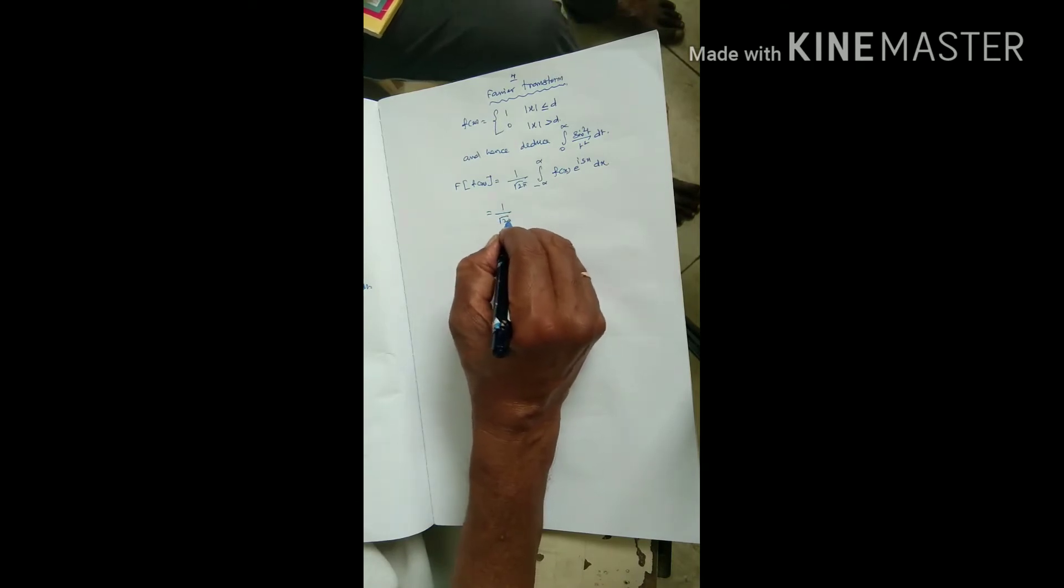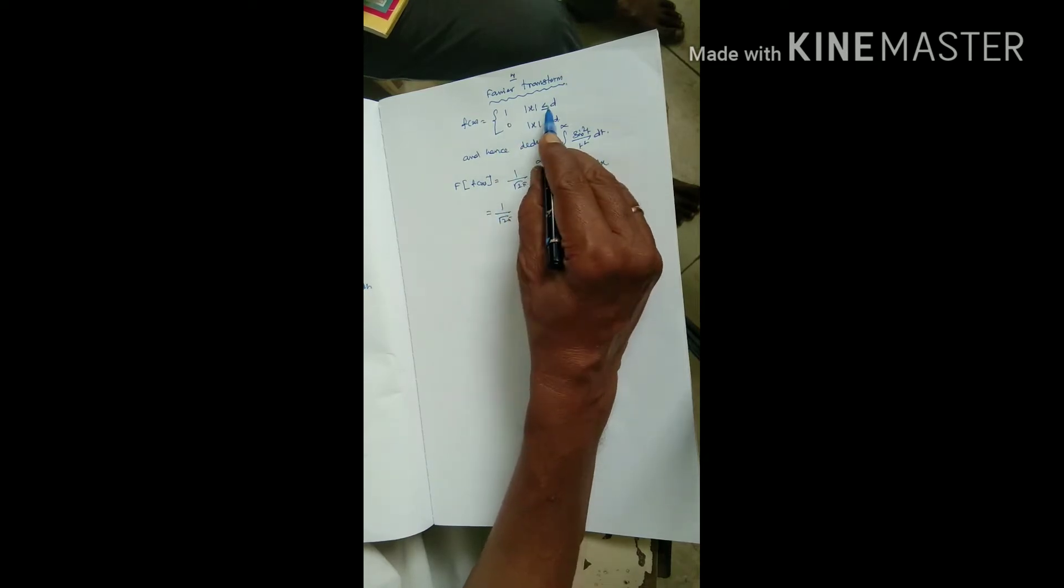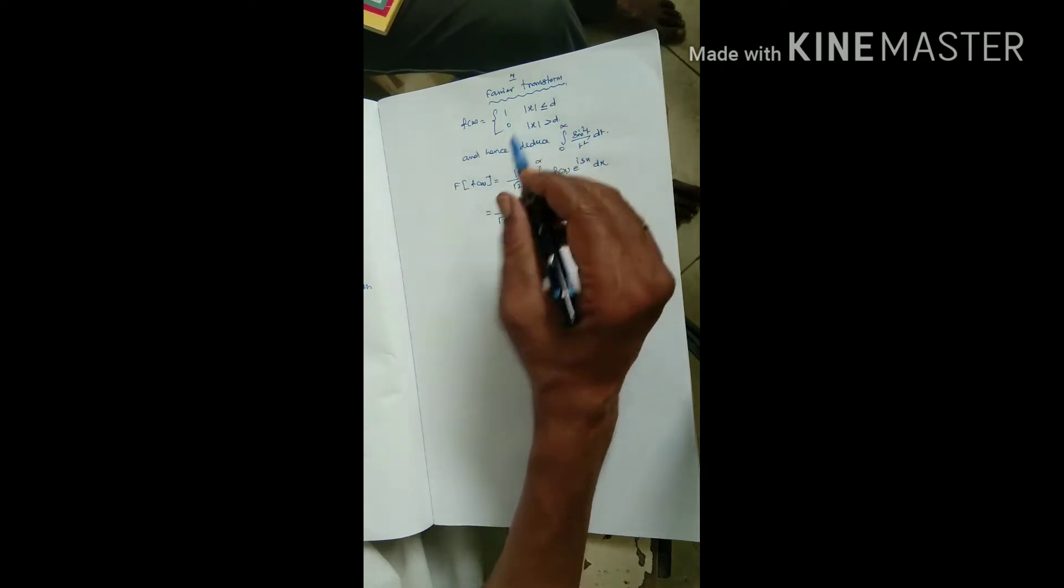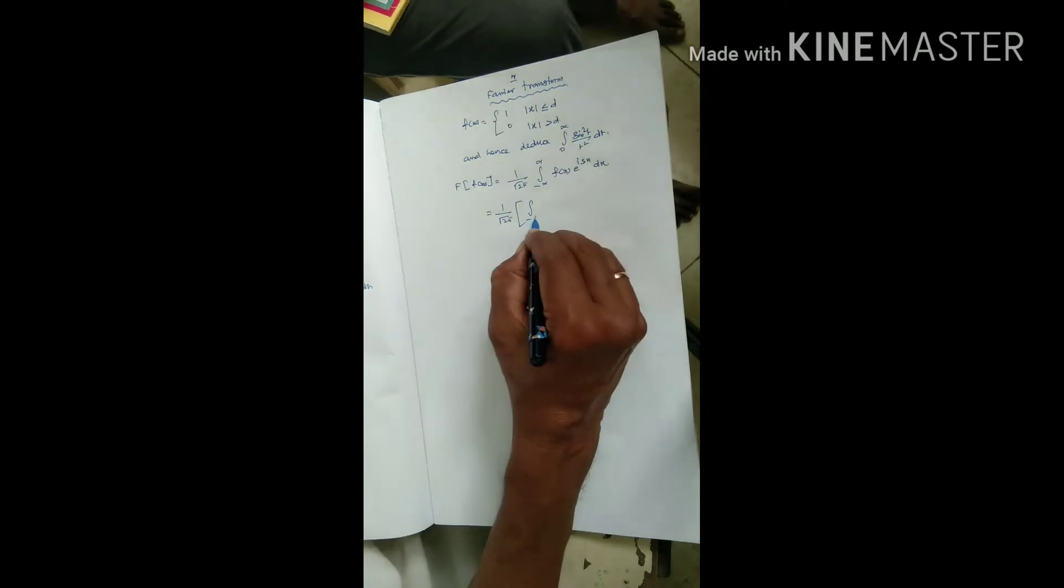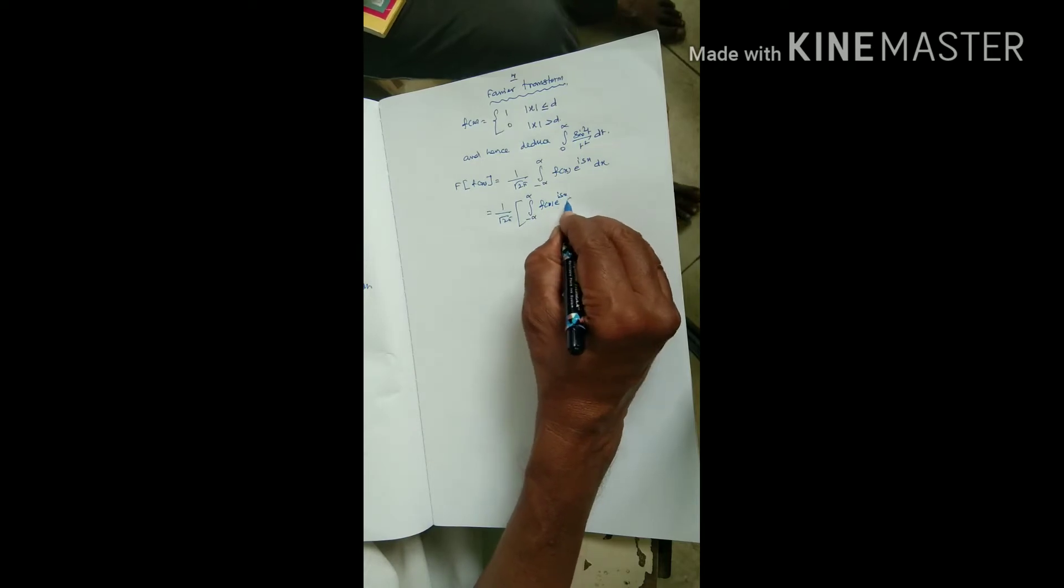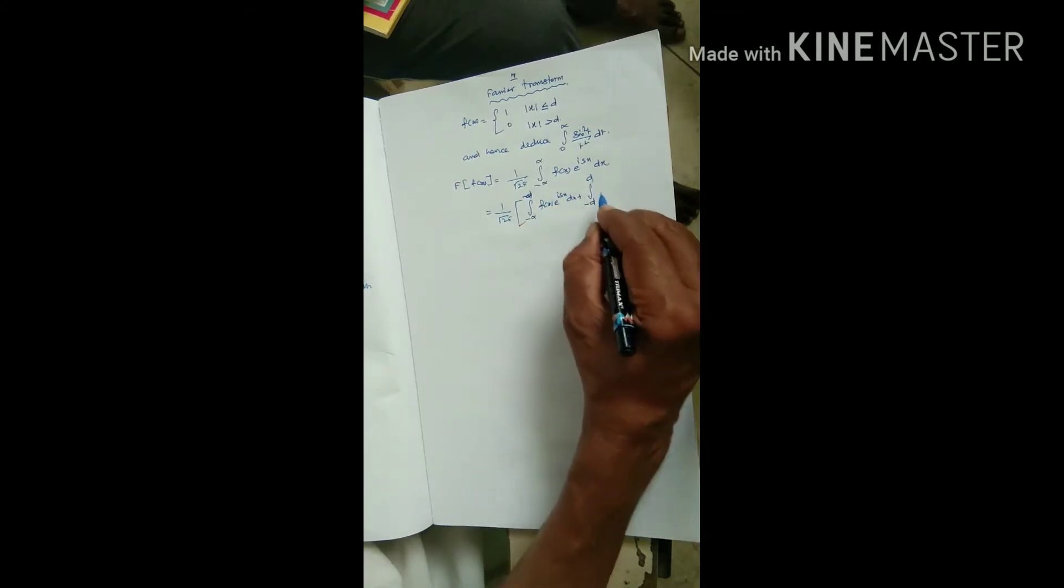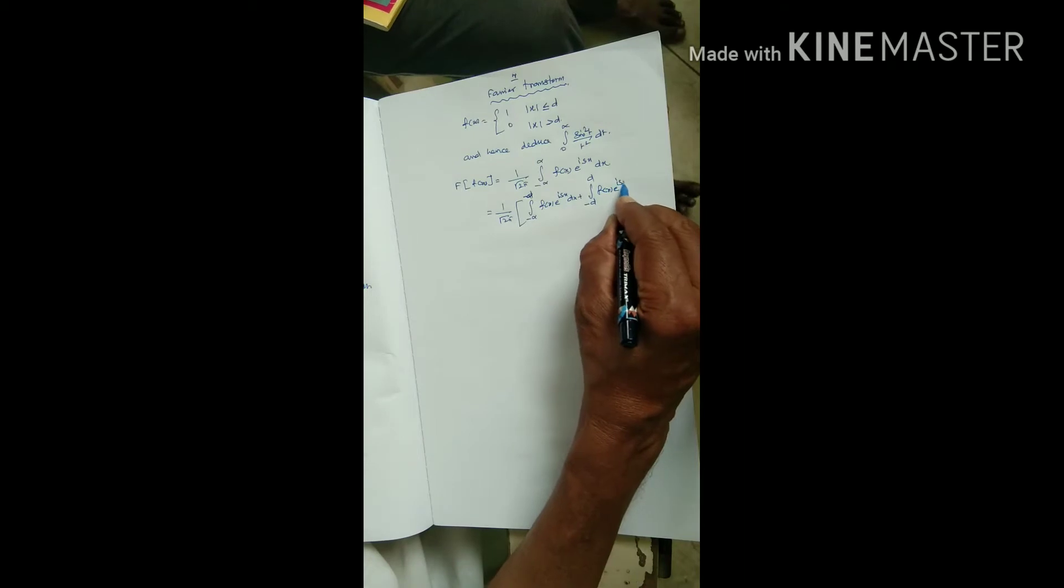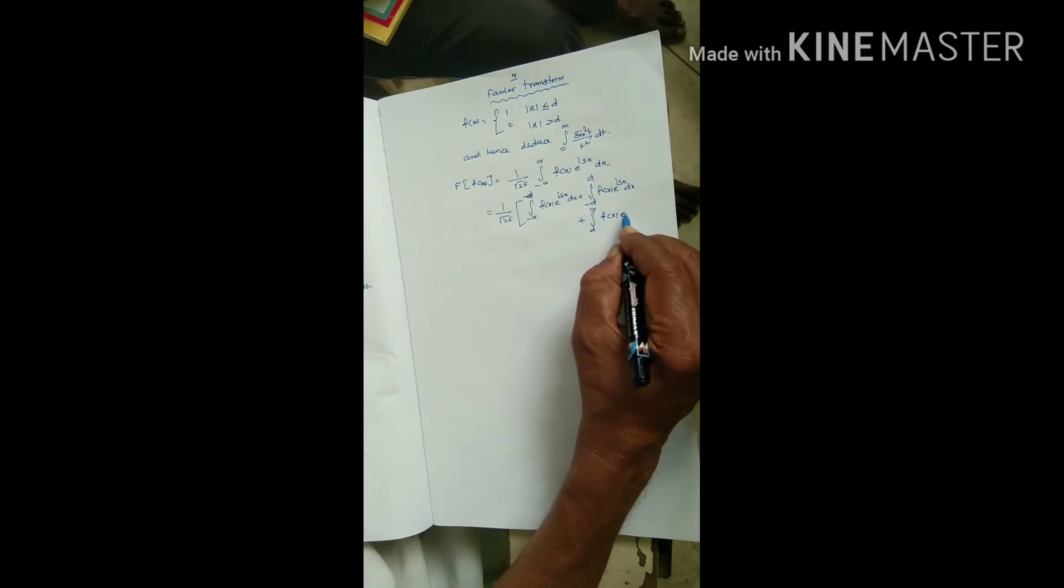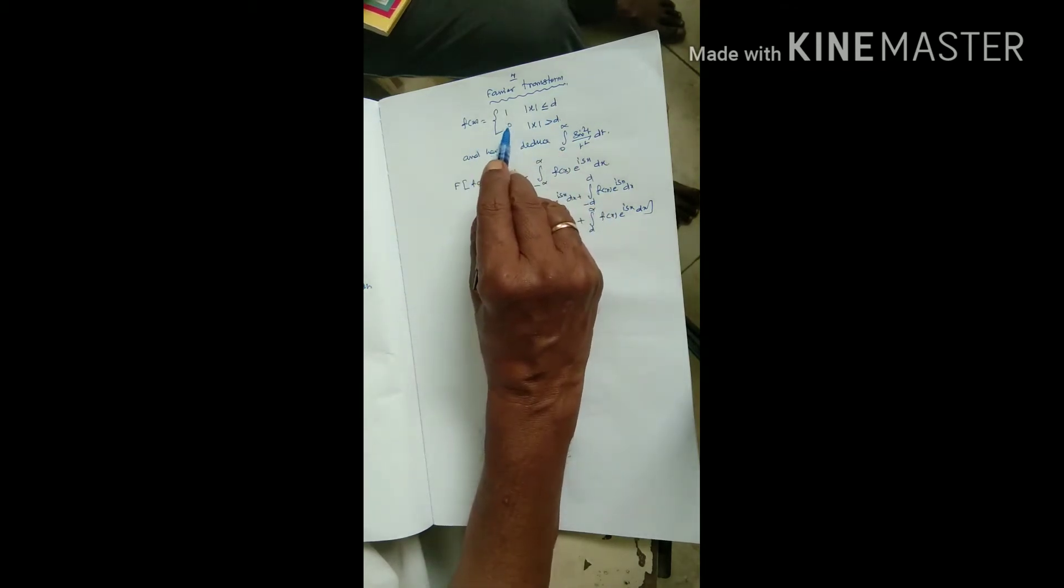1 by root 2 pi, integral minus d to plus d f of x e power is x dx plus the integrals from minus infinity to minus d and d to infinity. If x greater than d then f of x equals 0.